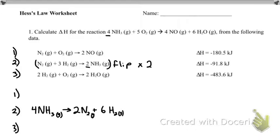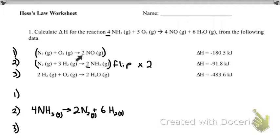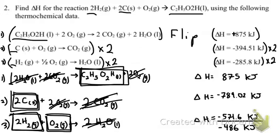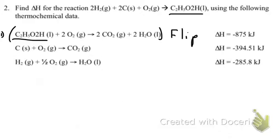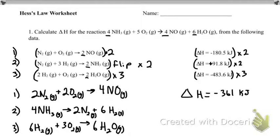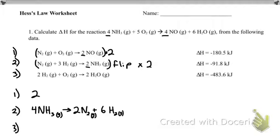Then I look and I see that I need four NOs on the product side. Here I have NO on the product side, so that's good, but I only have two of them. So I'm going to multiply this by two, and I'll rewrite that reaction down below, multiplied by two.